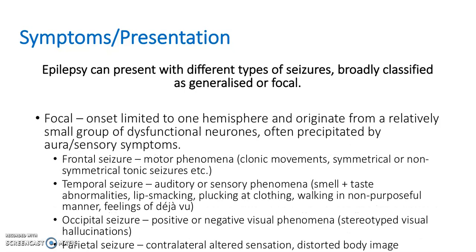Focal seizures occur in one hemisphere, originate from a small group of neurons, and can often be precipitated by aura and sensory symptoms. They are classified by which lobe they occur in. A frontal seizure generally presents with motor phenomena. A temporal seizure presents with auditory or sensory symptoms. An occipital seizure presents with visual symptoms such as hallucinations. A parietal seizure presents with altered sensation on the opposite side of the body and often distorted body image.